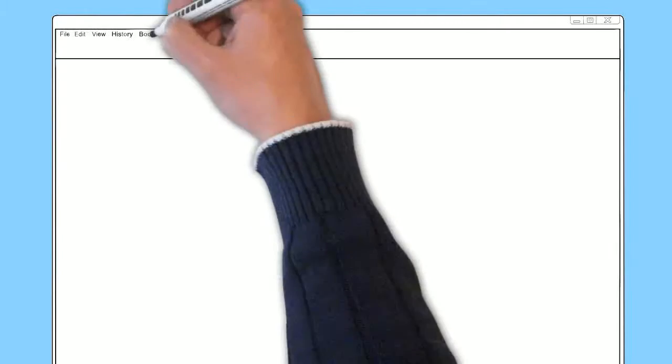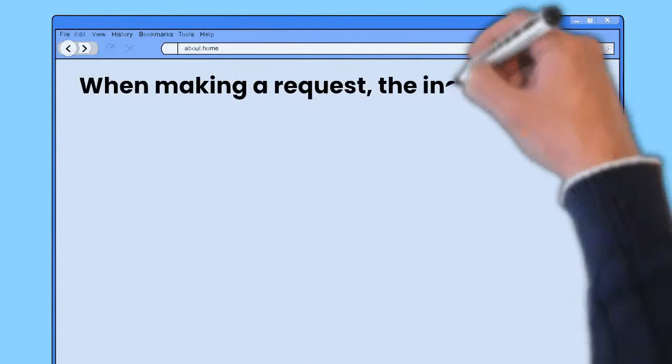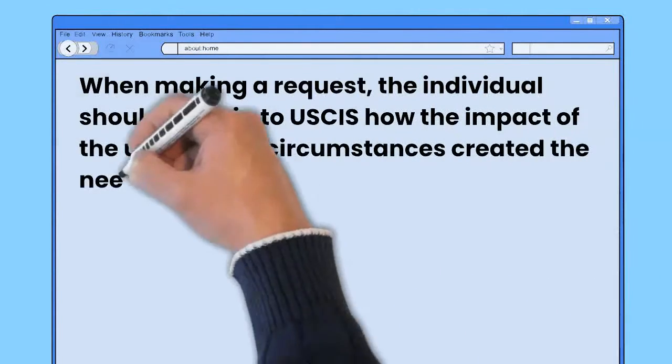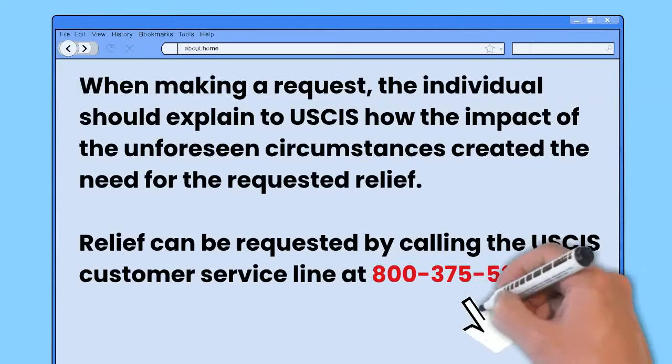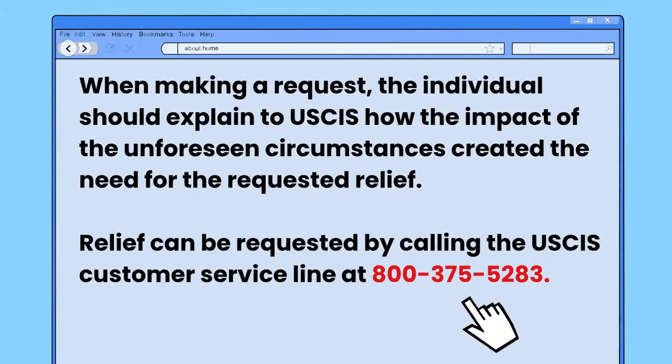When making a request, the individual should explain to USCIS how the impact of the unforeseen circumstances created the need for the requested relief. Relief can be requested by calling the USCIS customer service line at 800-375-5283.